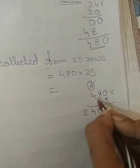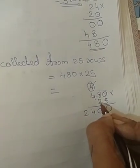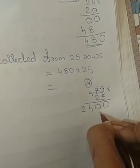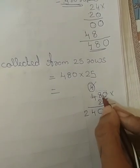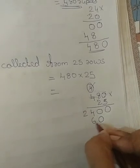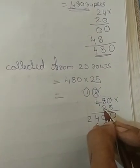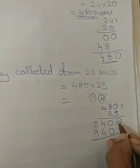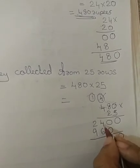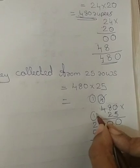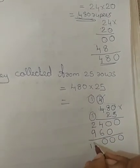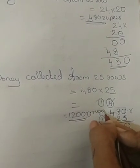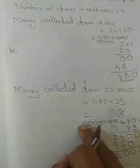Now we multiply 5 with these 3 numbers. The next step is we multiply 2 with these 3 numbers. First: 2 into 0 is 0, write that 0 here. Next step: 2 into 8 is 16 — write 6 here and 1 as reminder. Next step: 2 into 4 is 8; 8 plus 1 is 9. Now we add: 0; 4 plus 6 is 10 — write 0 and carry 1; 2 plus 1 is 3; 3 plus 9 is 12. The answer is 12,000 rupees. Money collected from 25 rows equals 12,000 rupees.